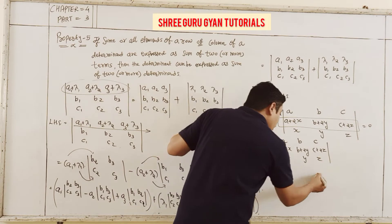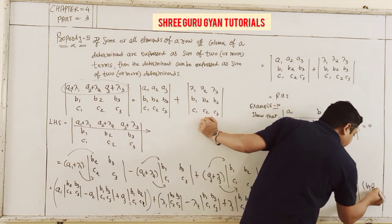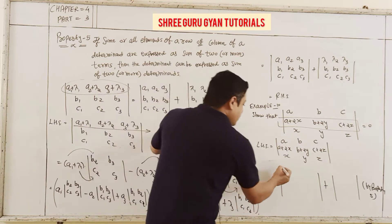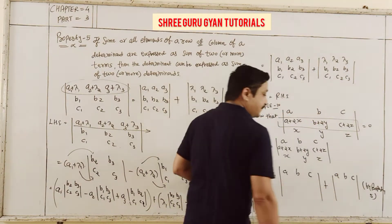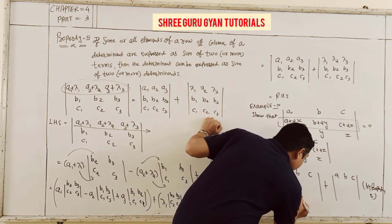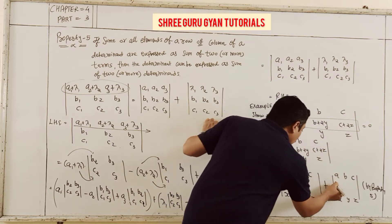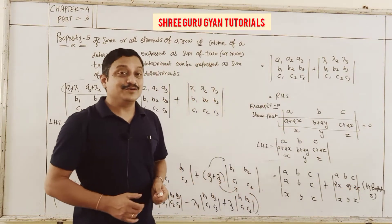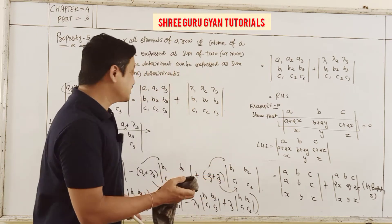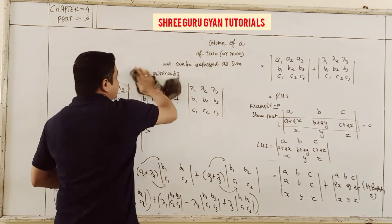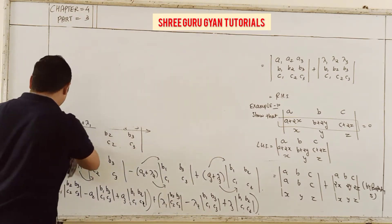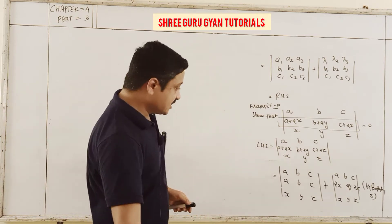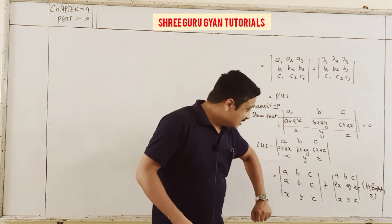By property 5, split into two determinants. The first has a, b, c in the second row with same first and third rows x, y, z. The second has 2x, 2y, 2z in the middle row. Check: any two rows of a determinant with the same elements gives value 0. Here del1 has first row and second row the same, giving 0. In del2, taking 2 common from the second row, second row and third row are the same, giving 0. So the final answer is 0.